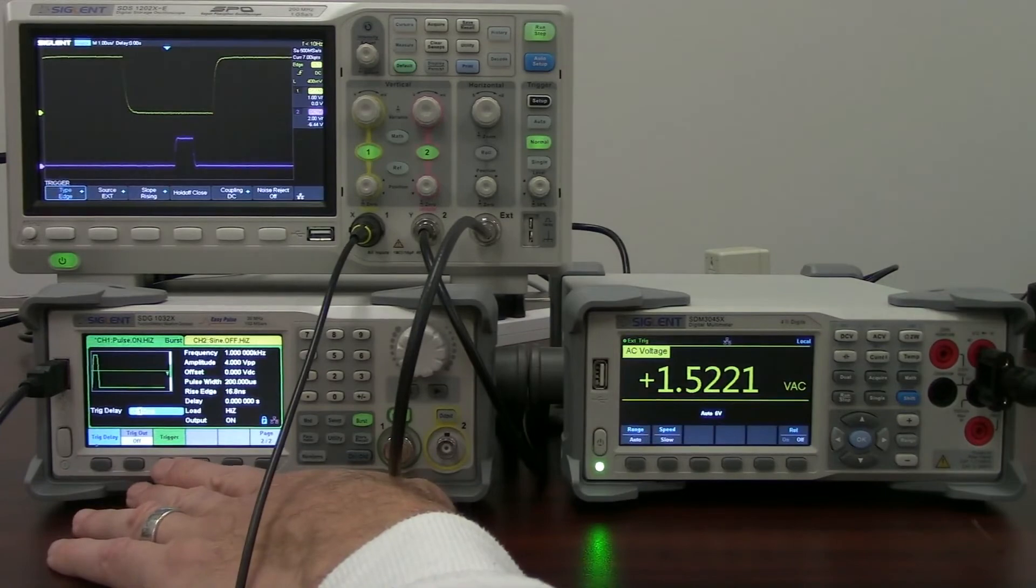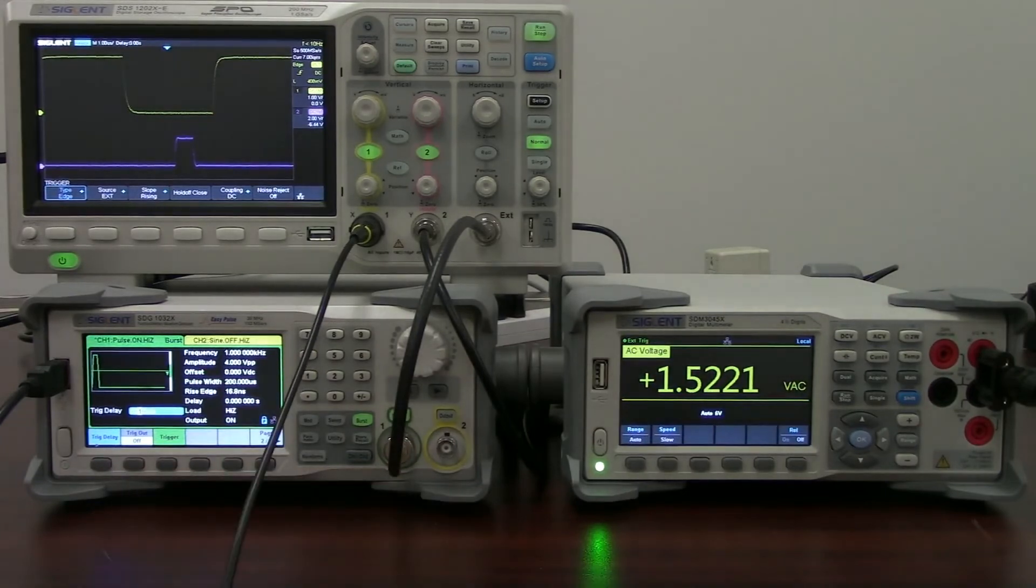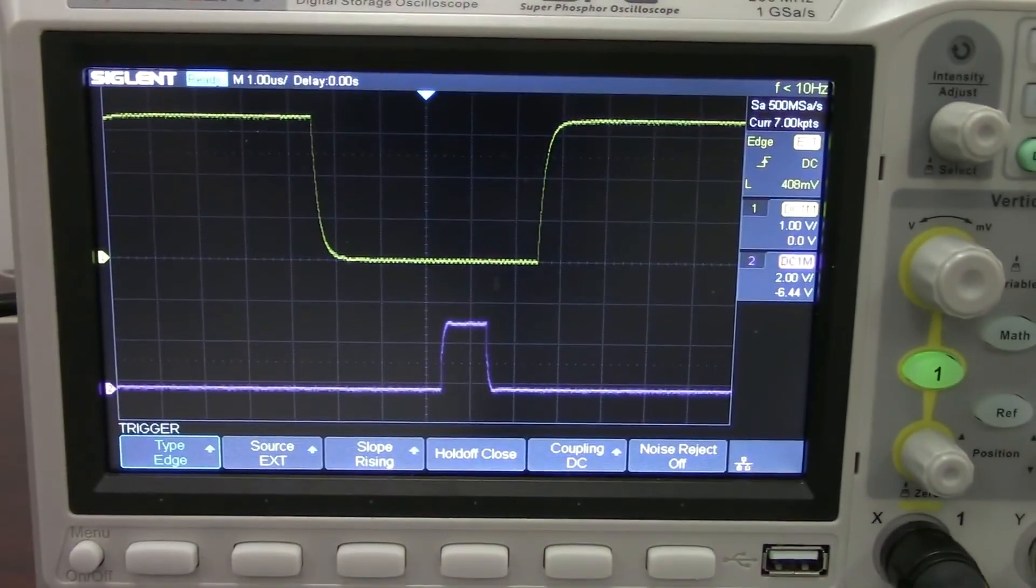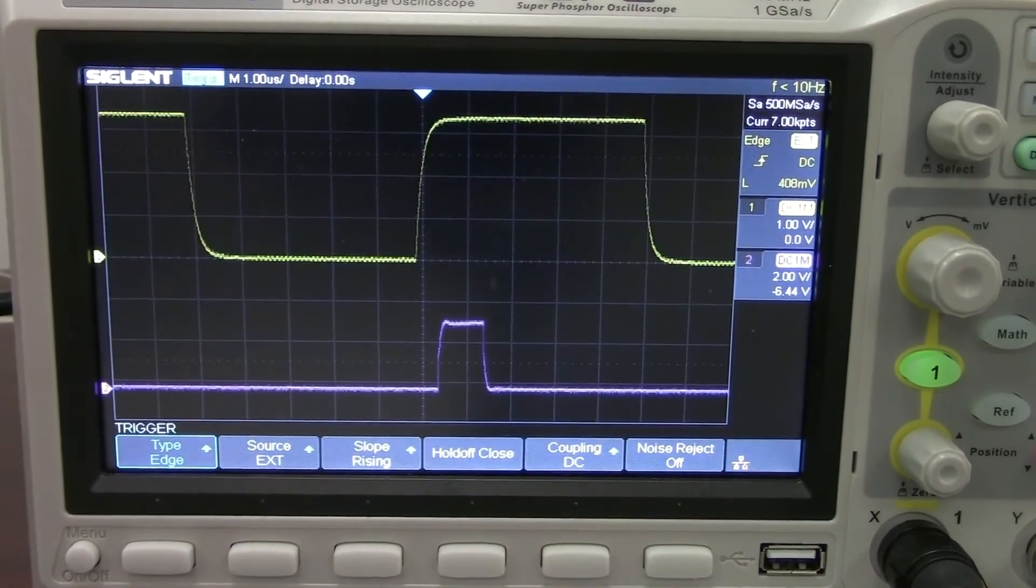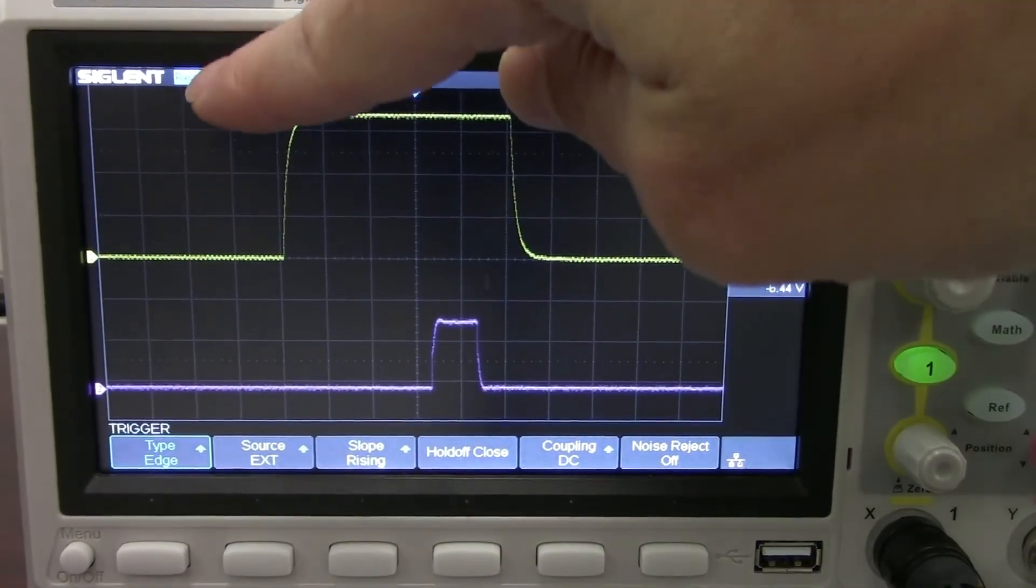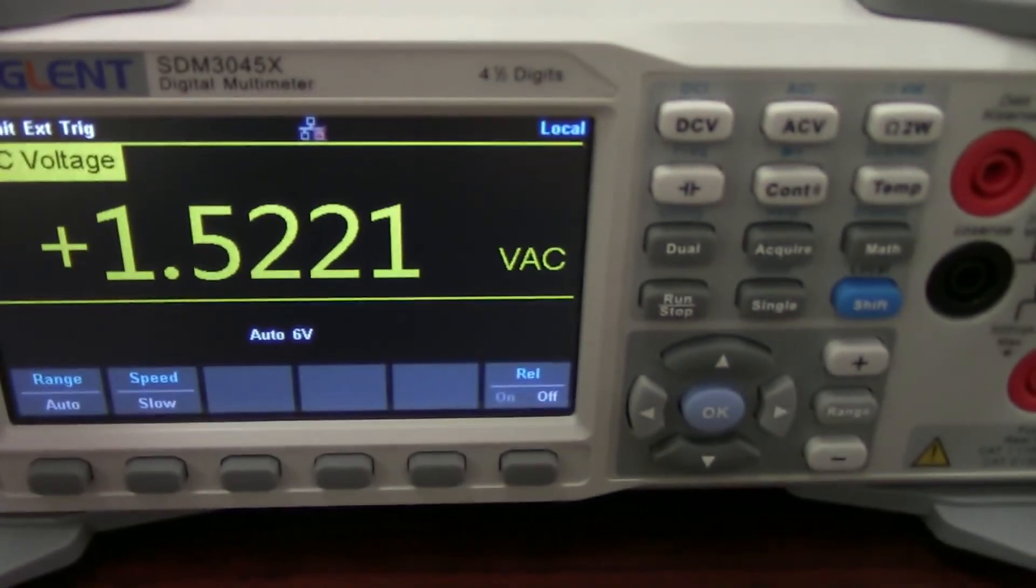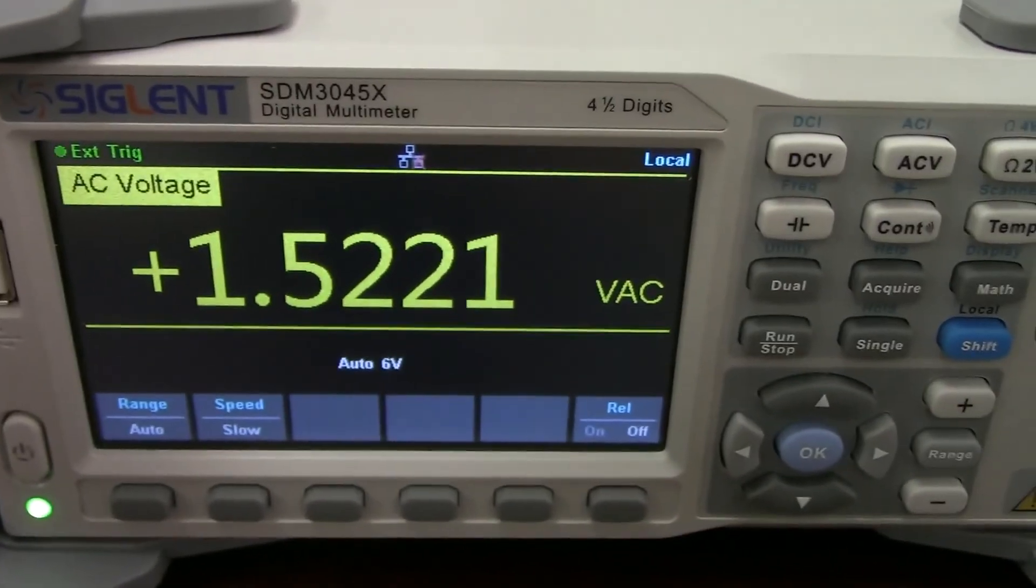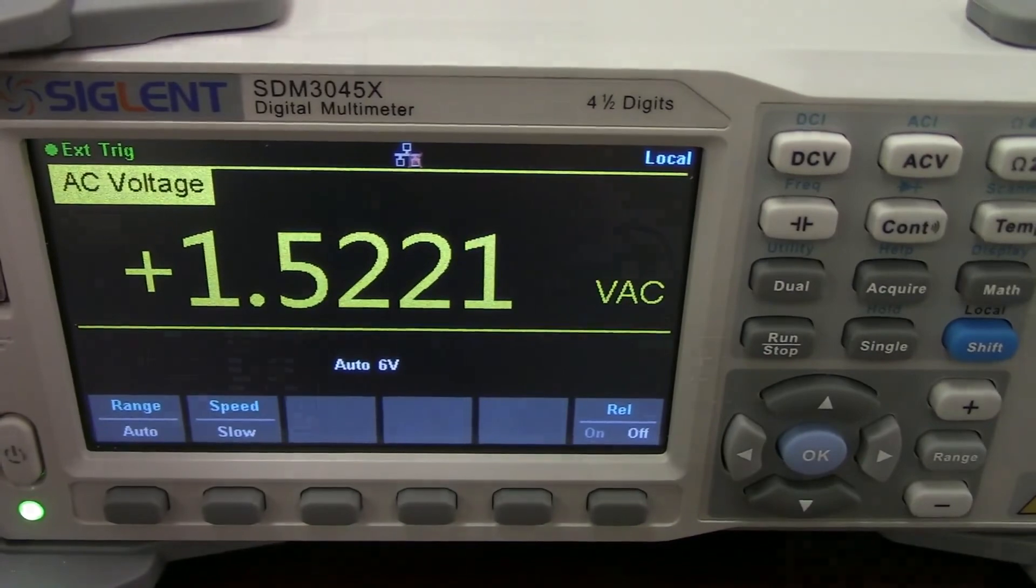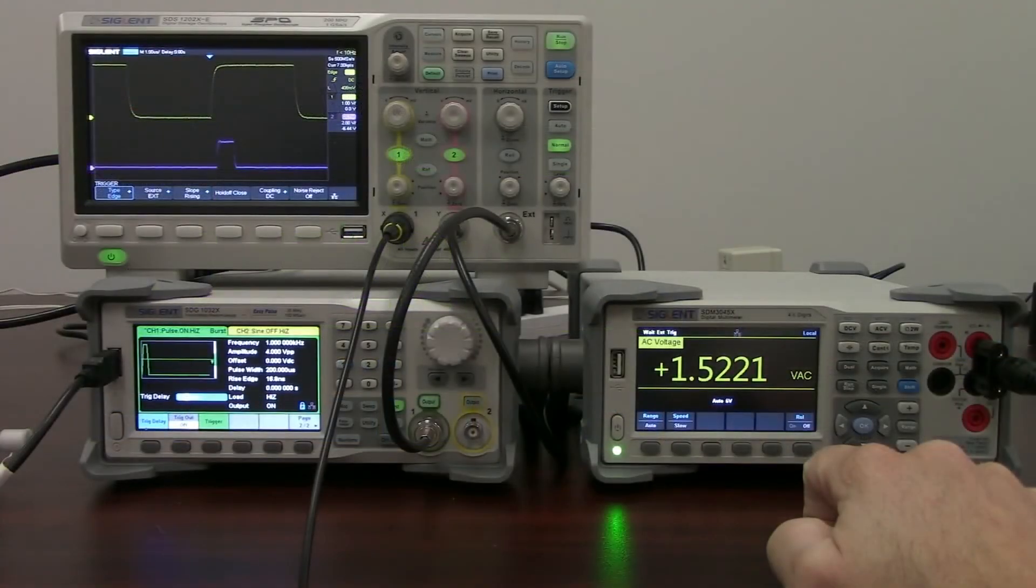Pressing the trigger button, you'll see we actually get external trigger here. And you can see that indicated by the trigger indication up at the top of the screen here on the scope. And as we go over to the multimeter, you can also see that we are getting its external trigger. So it is also triggering and making a measurement. So you can synchronize a lot of instrumentation using that external bus.